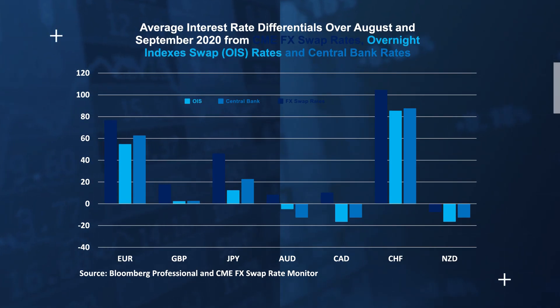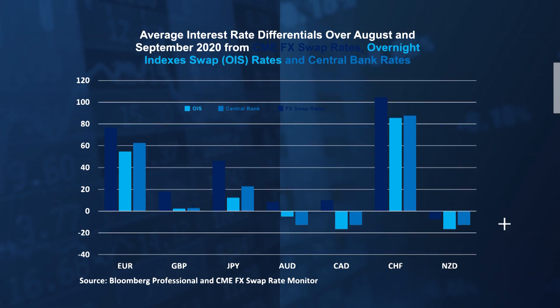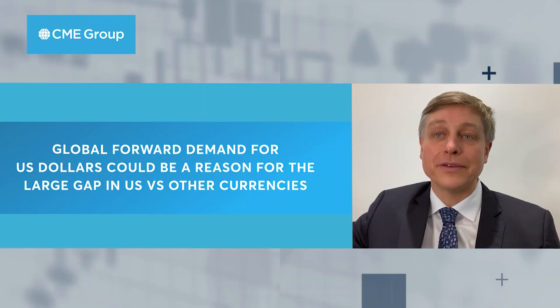Way number four: the currency markets themselves. An implied interest rate differential can be calculated from the difference between the value of a currency in the spot and futures market. For example, CME's FX swap rate monitor calculates the difference in the implied interest rate differential between CME FX futures and CME FX Link's central limit order book.